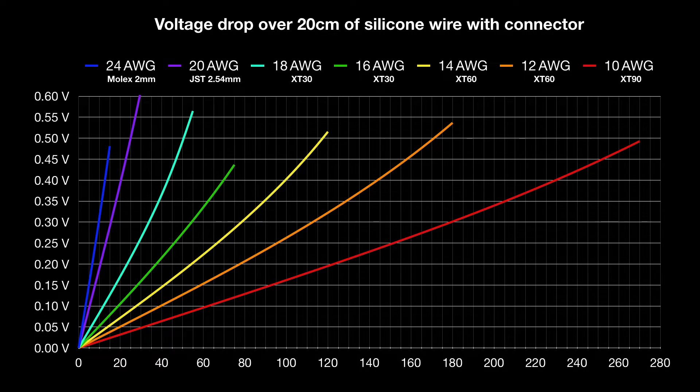For example, if you have a small 2.5 inch drone that takes 30 amps in a punch and has a JST connector on a 20 gauge wire, it's well worth upgrading to an XT30 and an 18 gauge wire. You can reduce your sag by as much as 0.3 volts.